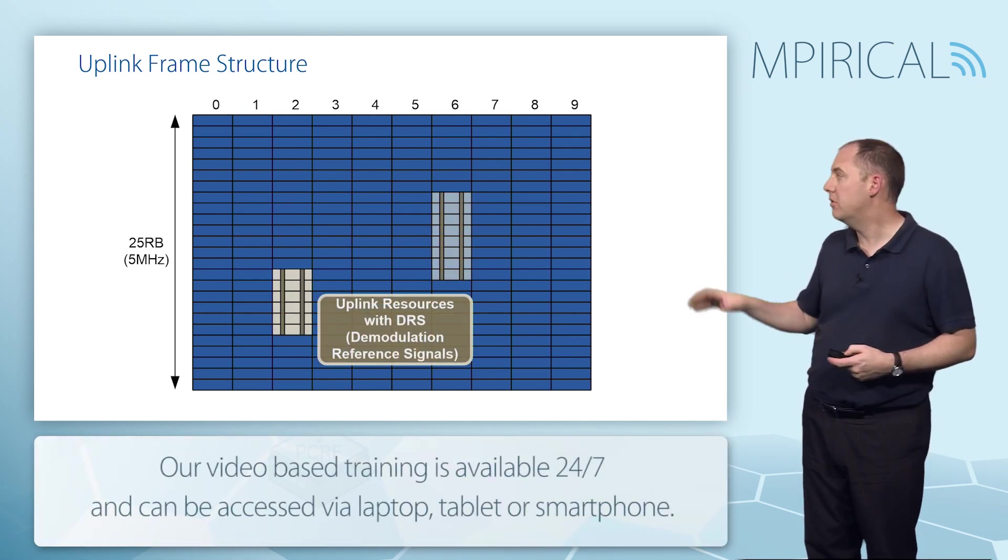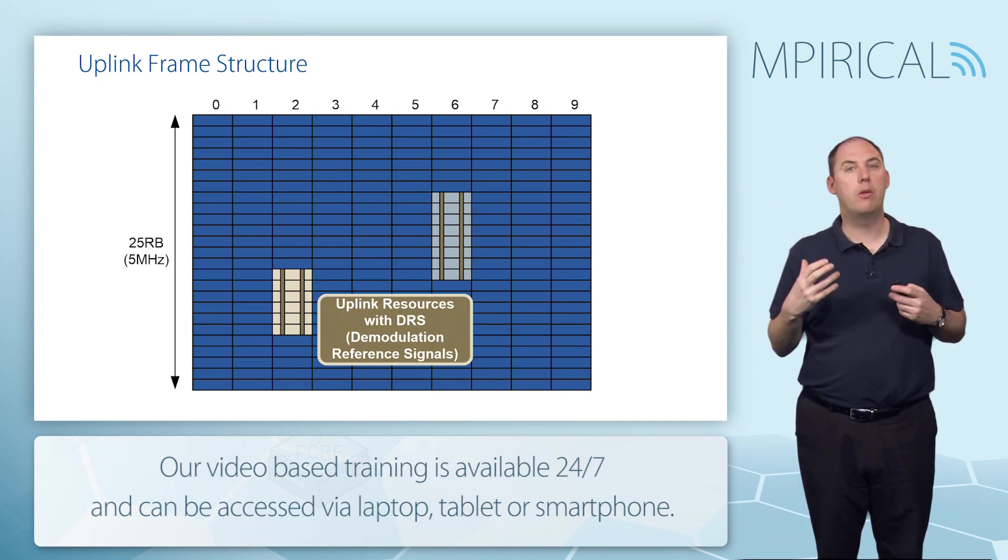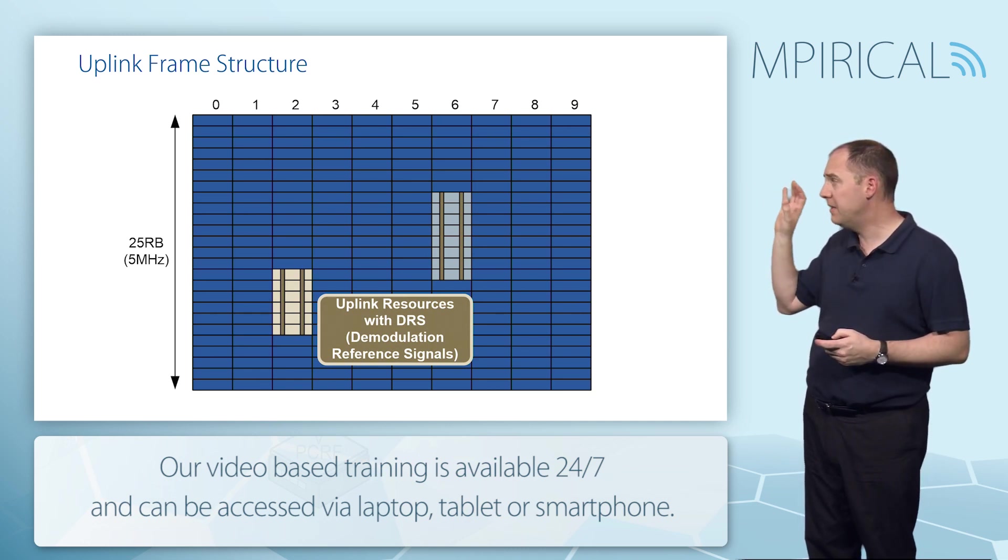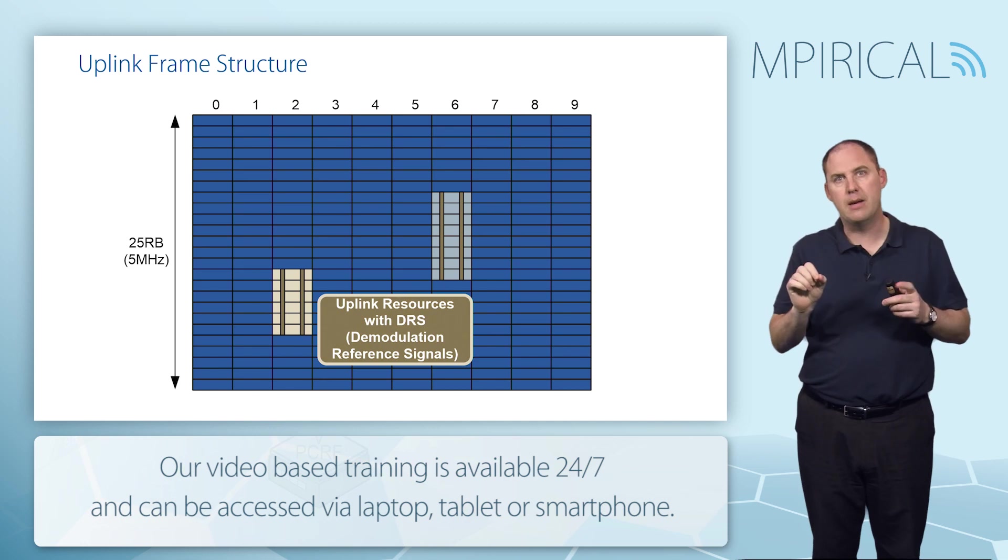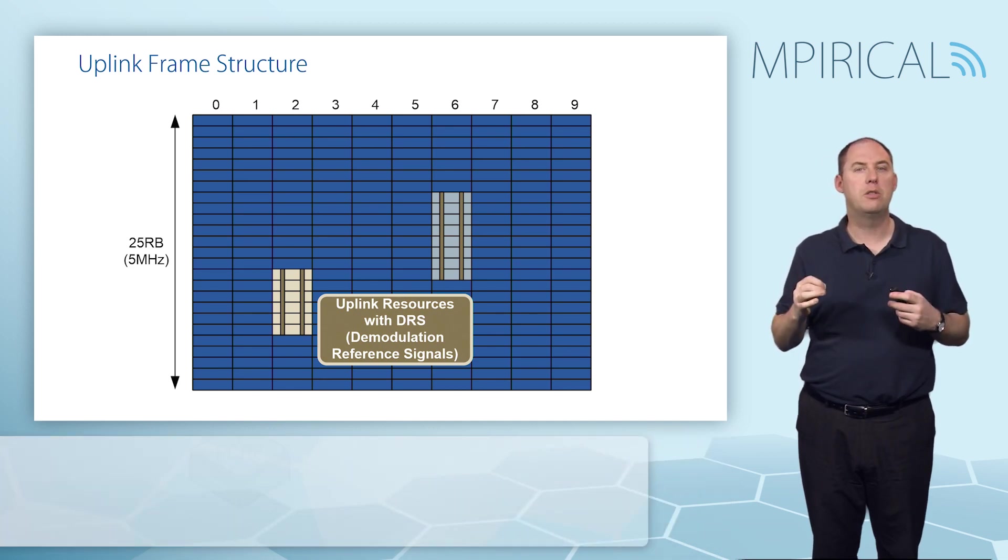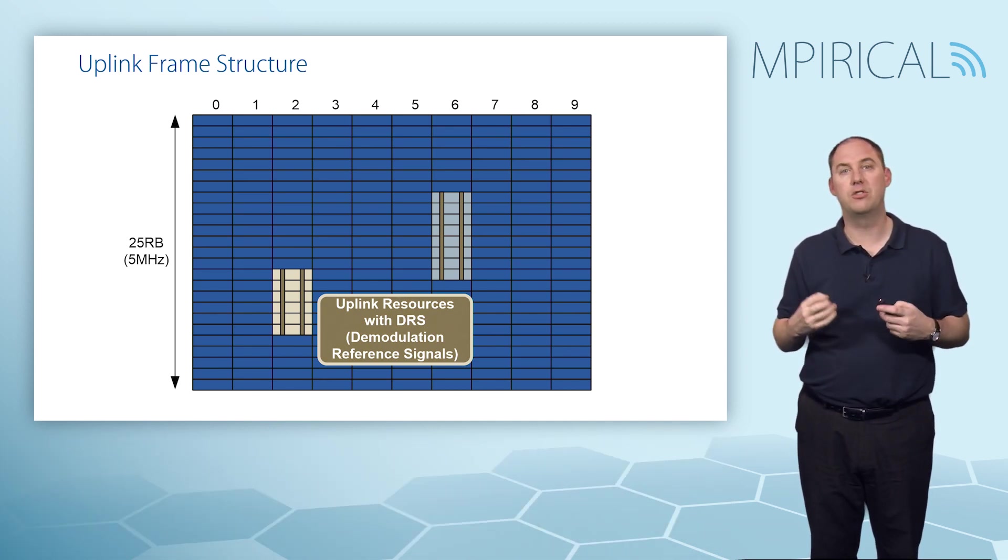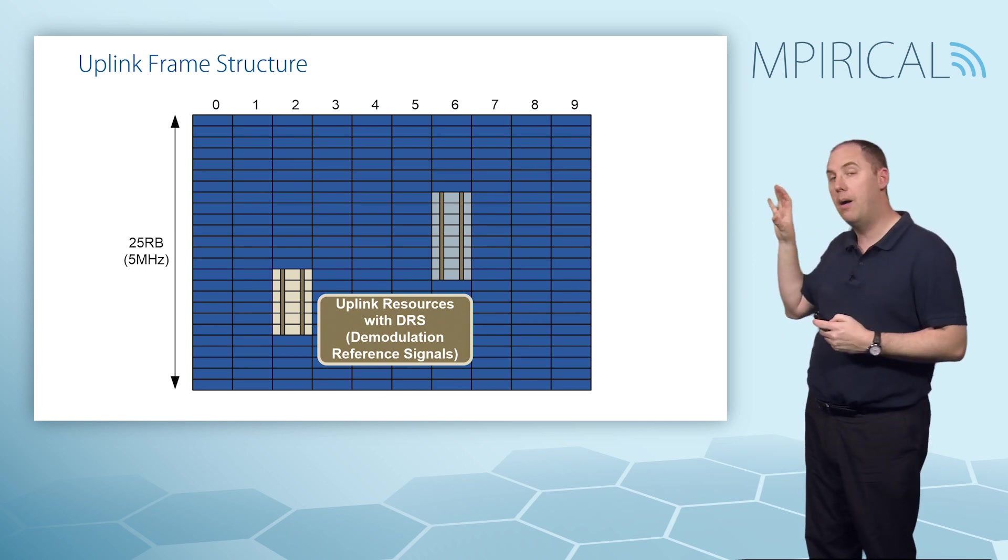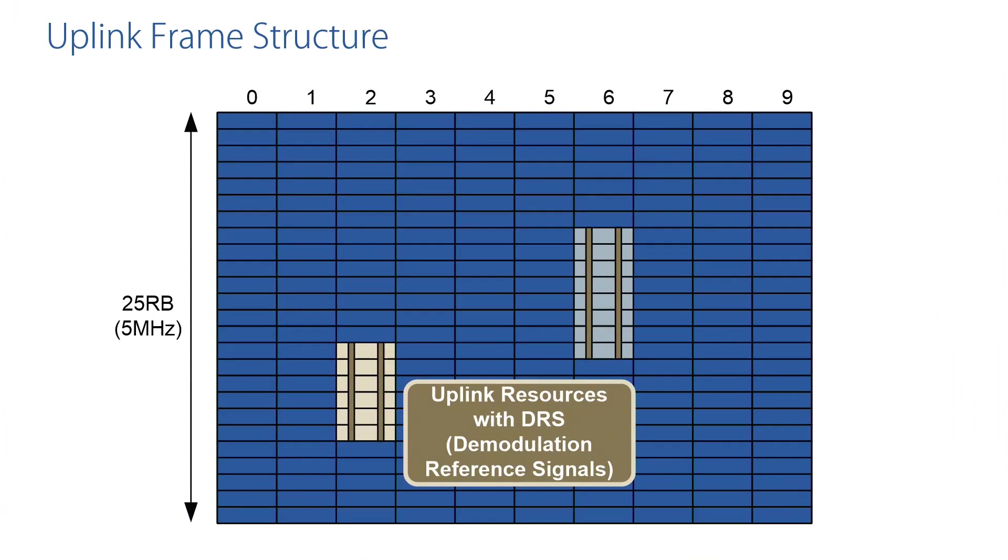The key thing is when you schedule a user, you'll schedule them some resources, and specifically you can see some strips. These strips are to do with something called demodulation reference signals, or DRS signals. These are uplink reference signals used by the eNodeB so that it can correlate the signals at the base station.